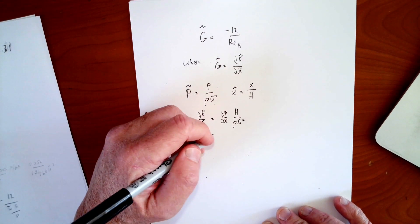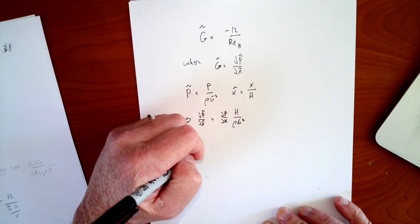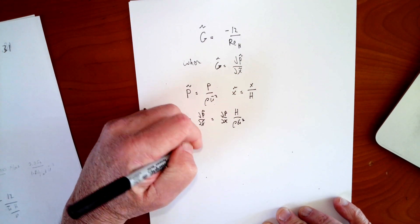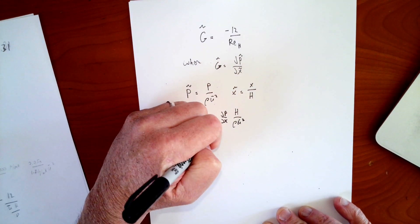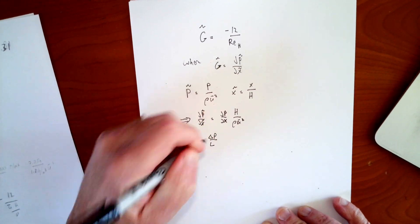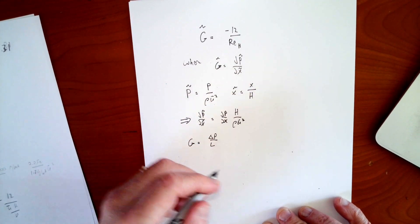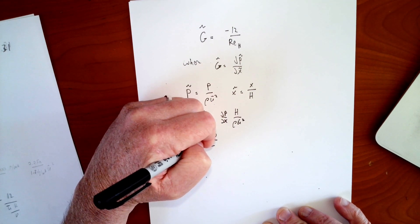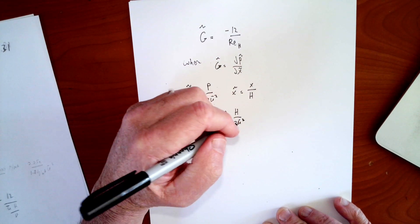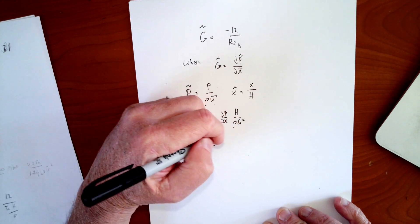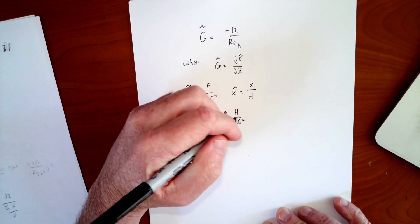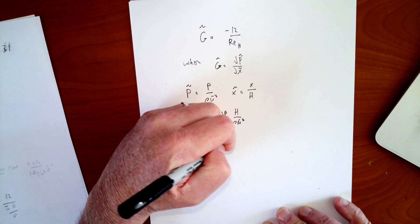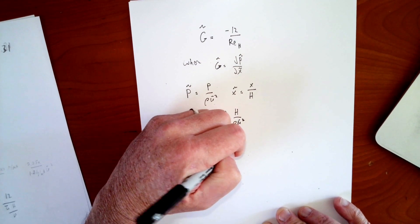If we want an actual pressure gradient, so g therefore is equal to delta p over l, which is dp dx here, say minus dp this way, and then h over rho u bar squared.